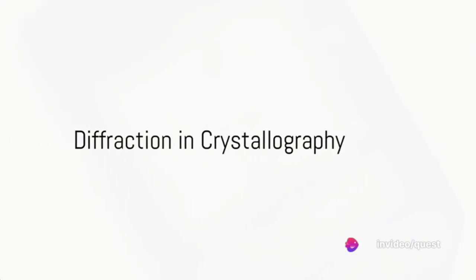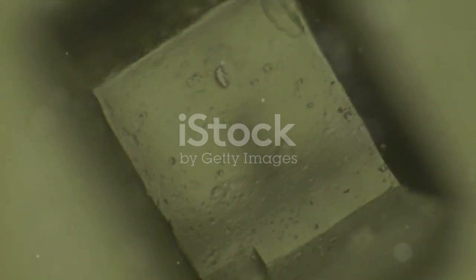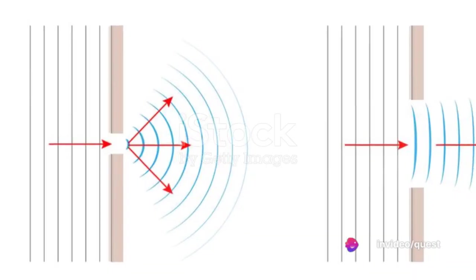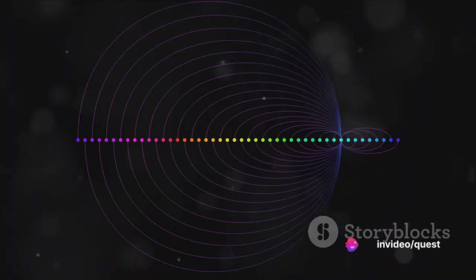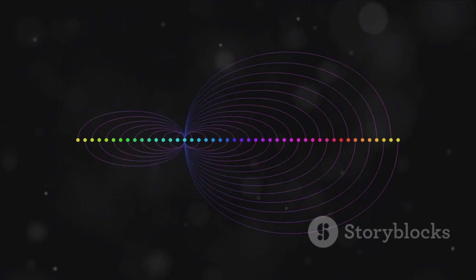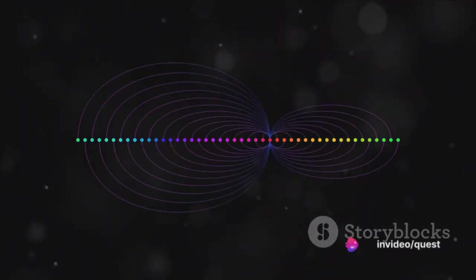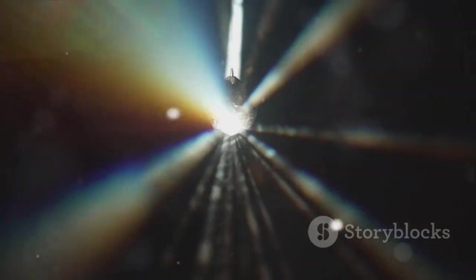Ever noticed how light bends when it passes through a crystal? That's diffraction for you. This phenomenon is not just limited to light, it extends to other types of waves, including X-rays, which are paramount in the world of crystallography. So what exactly is diffraction? Simply put, it's the bending of waves around obstacles or when they pass through a gap. In the case of crystals, the waves are X-rays and the obstacles are the atoms within the crystal. As these X-rays pass through, they bend, creating a pattern that can reveal the internal structure of the crystal.